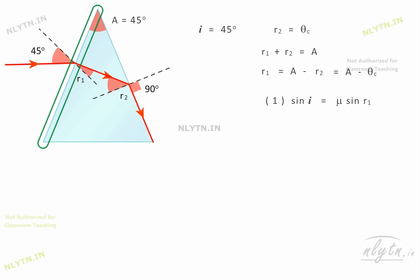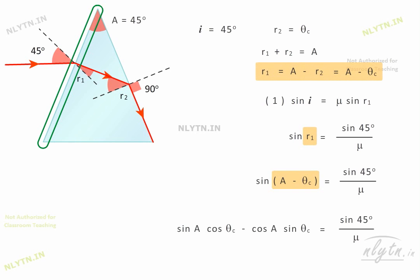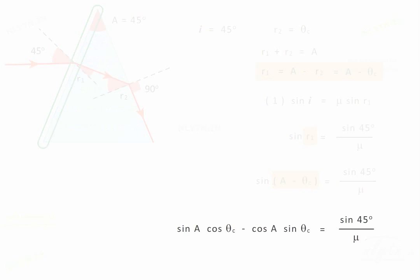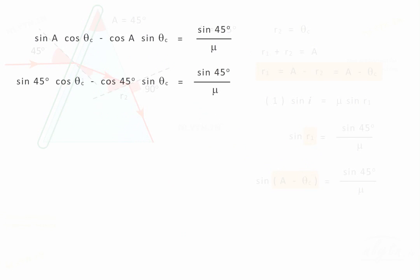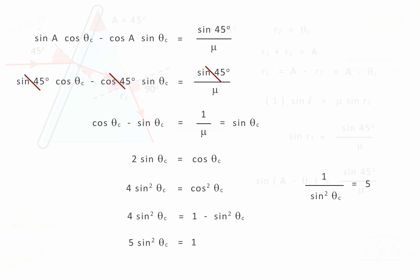Now, using Snell's law for this interface, we have this equation. Using the value of R1 from this equation, we get the value of mu.